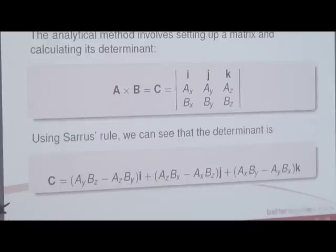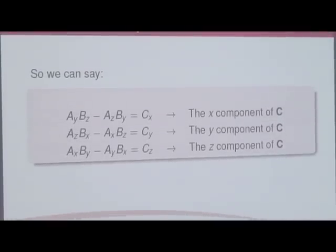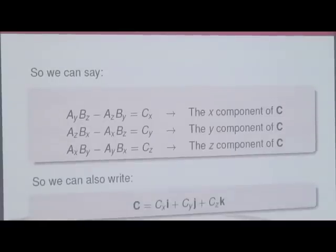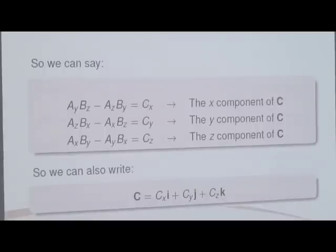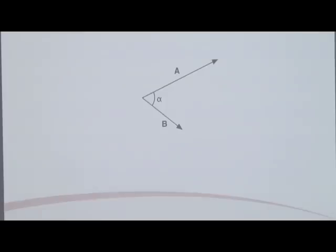If you've covered matrices before you should know what a determinant is. Essentially what you do is take the first value for i, and you do Ay times Bz, then subtract Az times By. You do the same thing for j and k and end up getting an equation with an i component, a j component, and a k component. So the cross product is a vector in three-dimensional space.